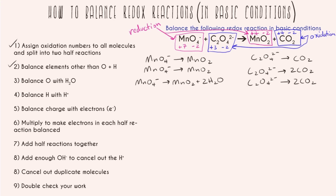Step four: balance hydrogen with H⁺. In the manganese half reaction we don't have any hydrogen on the left-hand side and we have four on the right, so we need to add four H⁺ to the left. For the carbon-containing half reaction, there is no hydrogen, so it's already balanced.